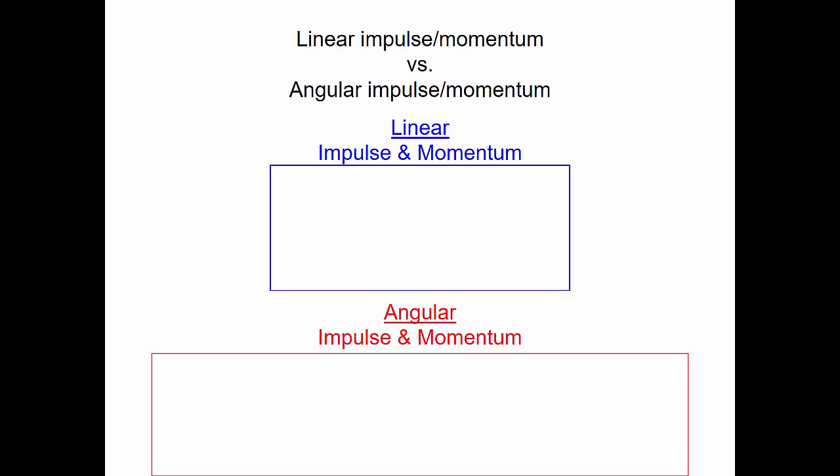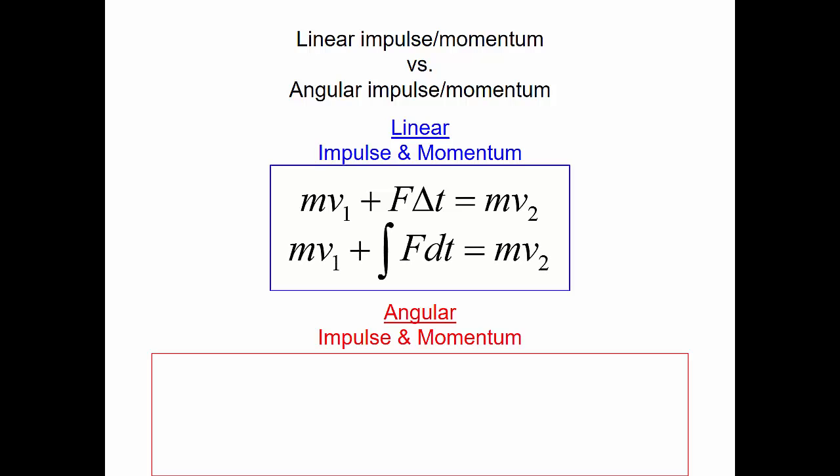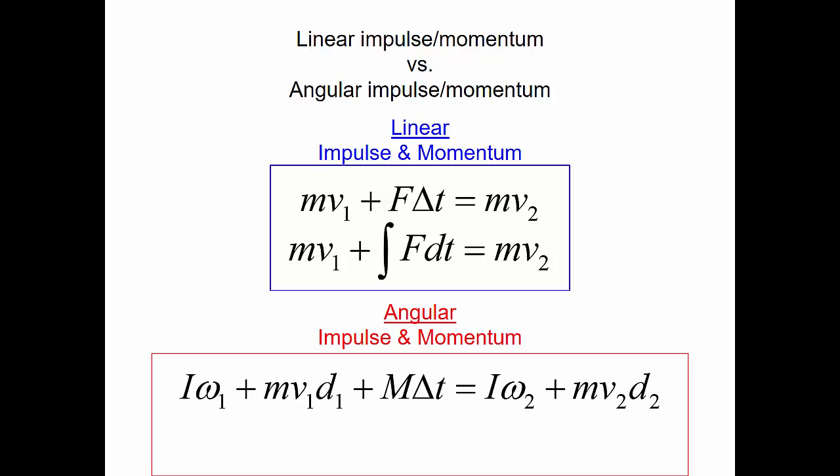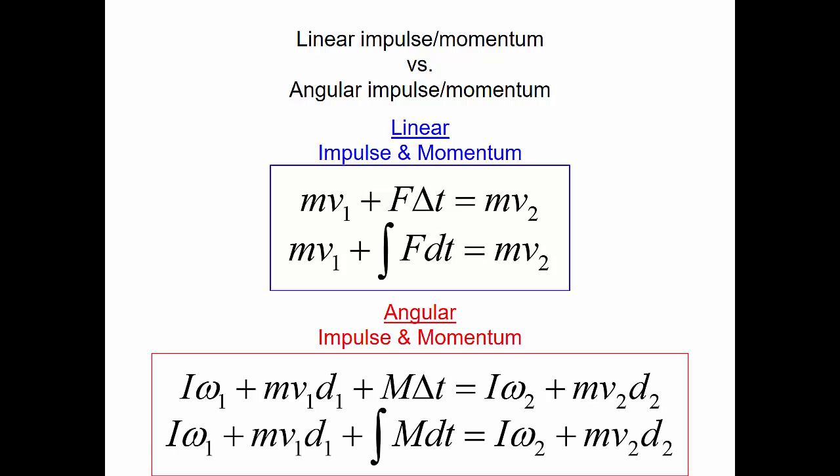Now let's put it all together. For linear impulse and momentum, we have: initial momentum plus impulse (force times change in time) equals final momentum. If our force is variable, we integrate the force with respect to time. For angular impulse and momentum, we have: initial rotational momentum plus translational momentum times distance, plus moment times change in time (the angular impulse), equals final rotational momentum plus translational momentum times distance. Note that d1 and d2 must be perpendicular to the velocity vector from the point of rotation. If the moment is variable, we integrate it with respect to time.